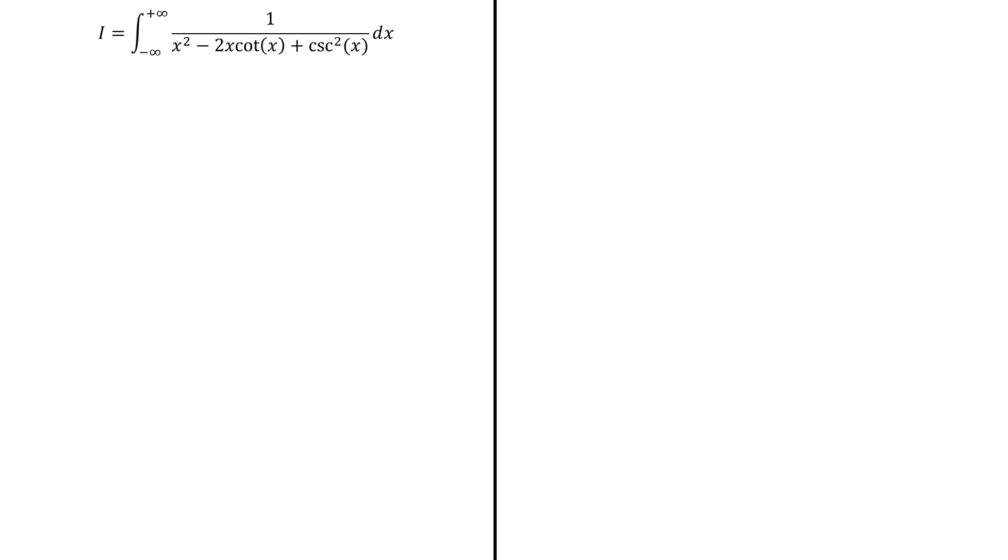Well, to begin with, let's focus on the denominator. Here, we'll write as follows. We know that cot(x) is cos(x)/sin(x), and we'll write csc(x) by its definition.